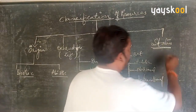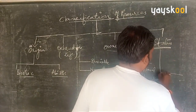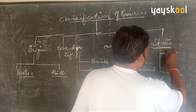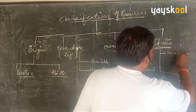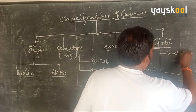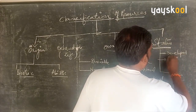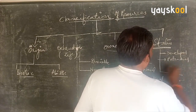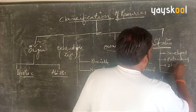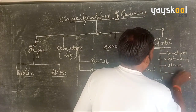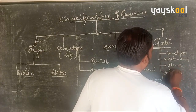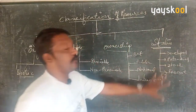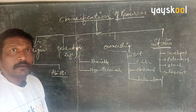On the basis of status of development, resources are classified into four types: first, developed resources — which we are currently using; second, potential resources — which we can use in the future; third, stock; and fourth, reserve — which we can also use in the future. These are the four categories under status of development.